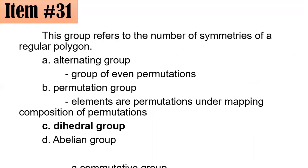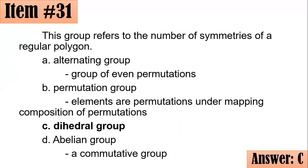This group is called the dihedral group. And letter D, abelian group, it's in fact a commutative group. That is, for example, A star B equals B star A. That property is being satisfied. Letter C is the correct answer.